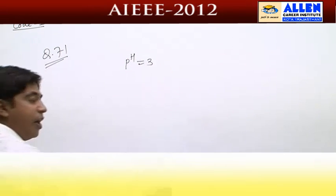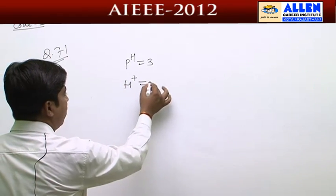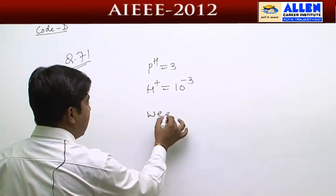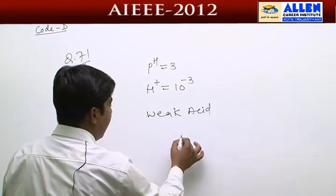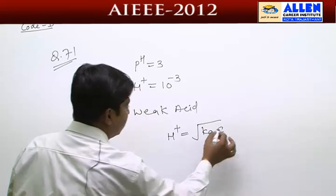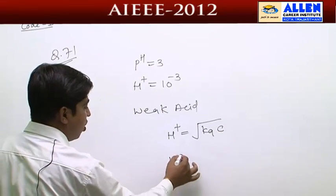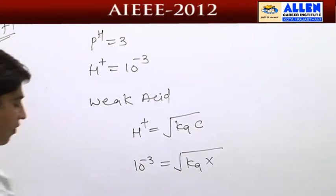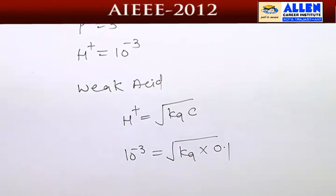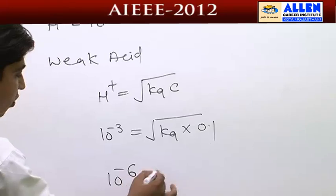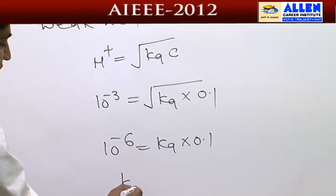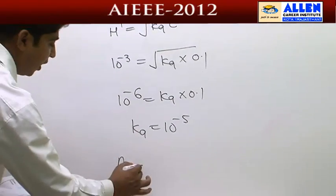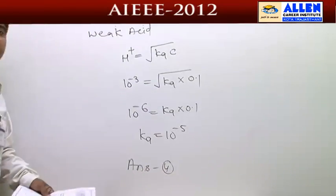From the question, pH equals 3. So concentration of H⁺ equals 10^(−3). For a weak acid, the formula is [H⁺] = √(Ka × c). Substituting: 10^(−3) = √(Ka × 0.1). Squaring both sides: 10^(−6) = Ka × 0.1. So Ka equals 10^(−5). This is the fourth option — the correct answer is Ka = 10^(−5).